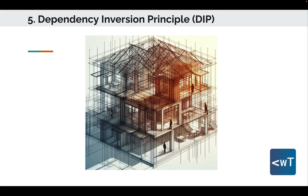Imagine building a house — in traditional methods, a roof relies directly on the walls for support, creating a direct dependency. But what if we flip that concept? The roof and the walls both depend on a sturdy framework, abstracting away that direct dependency on each other. This way, changes to one component won't directly impact the other, fostering flexibility and easier maintenance. In coding, high-level modules like the roof don't rely on low-level modules like the walls — instead, both depend on a common abstraction like the framework.